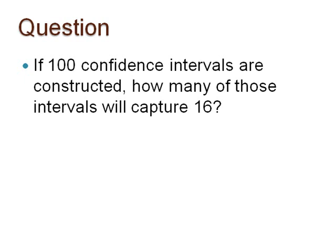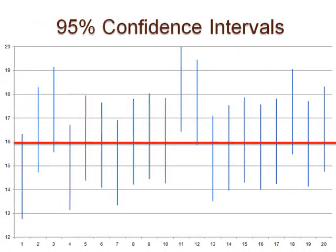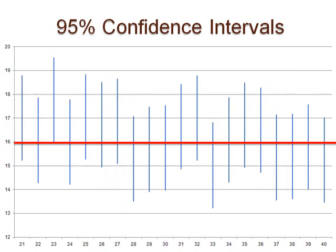Now, I will display these 100 confidence intervals in a series of graphs where each graph displays 20 confidence intervals. The confidence intervals are represented by the blue vertical lines, and the population mean of 16 is represented by the red horizontal line. Please note that I switched the x and y axes. The confidence interval captures the population mean when a blue line intersects the red line. As you view each graph, pause the video to determine how many confidence intervals did not capture the population mean of 16.